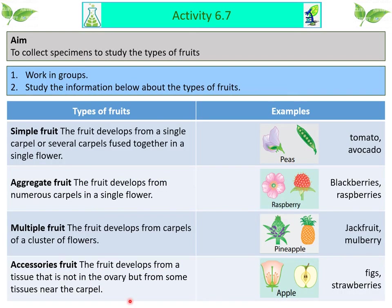Activity 6.7: The aim is to collect specimens to study the types of fruits. There are four types of fruits. Simple fruits are fruits developed from a single carpel or separate carpels fused together in a single flower — examples include tomato, avocado and pea. Aggregate fruits are developed from numerous carpels in a single flower — examples are blackberry and raspberry. Multiple fruits are developed from carpels of a cluster of flowers — examples are pineapple, jackfruit and mulberry.